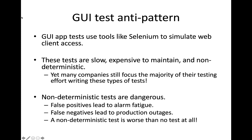Imagine you were an engineer working for Boeing and you're performing critical testing on a flight system, and that flight system passed 90% of the time. Would you feel confident in that system? Would you want to fly on that plane? So why are companies comfortable accepting failure and accepting these non-deterministic tests? Why are they comfortable delivering code that works 90% of the time to their customers?